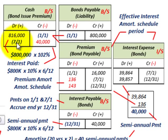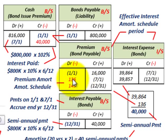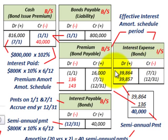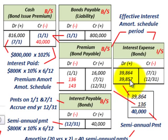On July 1st we make that first payment of $40,000 to our bondholders — credit cash $40,000. Then we divide it up: debit interest expense $39,864 and debit bond premium amortization $136, off our amortization schedule. The interest expense is reduced by the amount of premium amortized, and we repeat this for each semi-annual payment period.